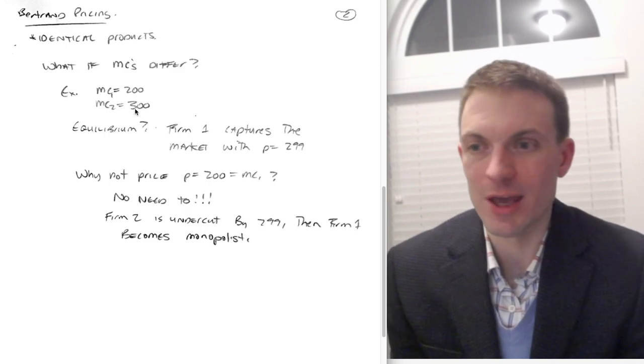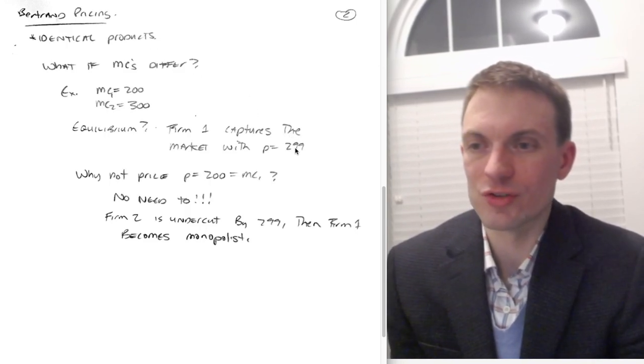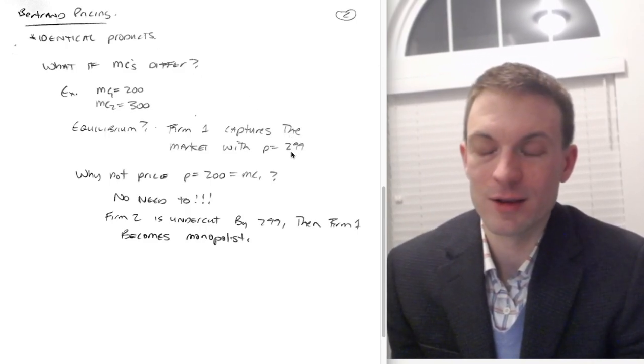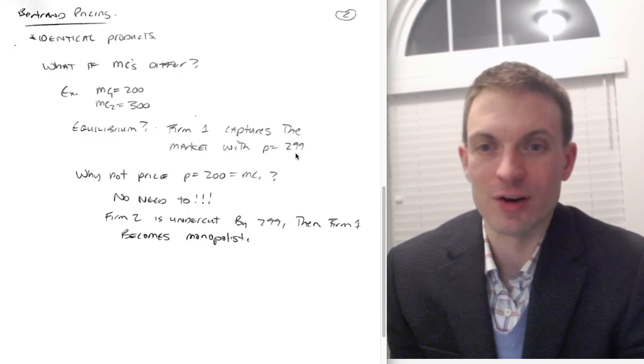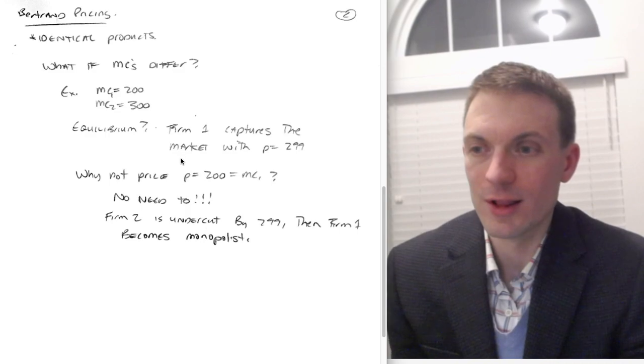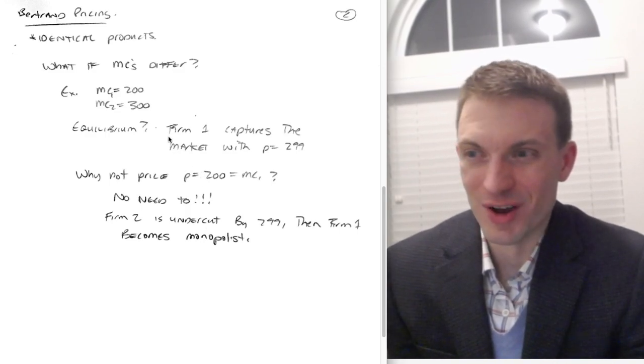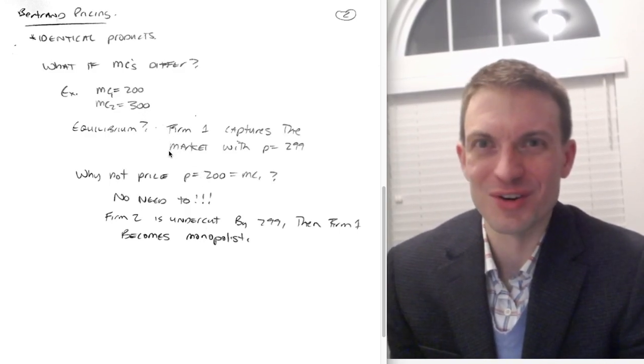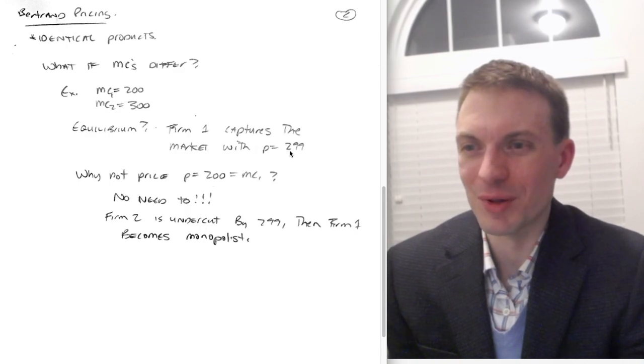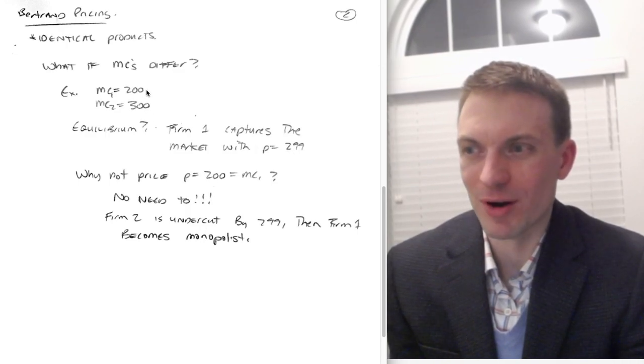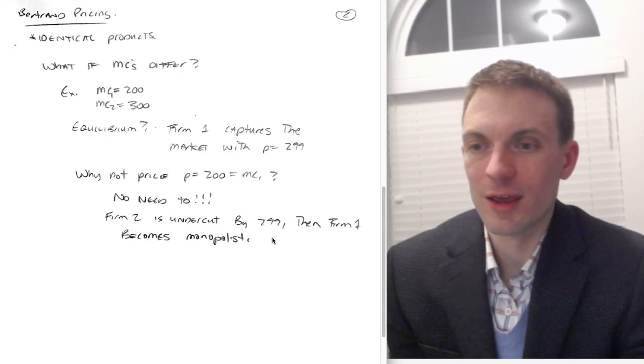I'm just using integers, so I'll say the equilibrium would be 299. The basic idea is you're gonna set the largest amount that you can set to still undercut this other rival. Why not set price equal to 200? Well, there's no reason to. Anything below 300 is gonna capture the market for firm one. Firm one's a monopolist at anything below 300. So there's no need to set anything lower. Firm two is gonna be undercut by 299, and firm one would become a monopolist.